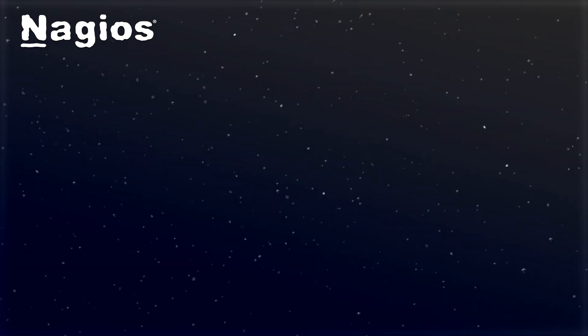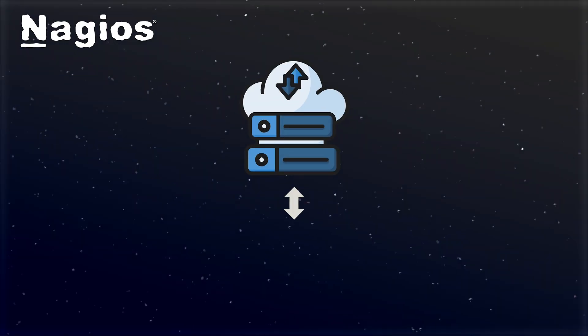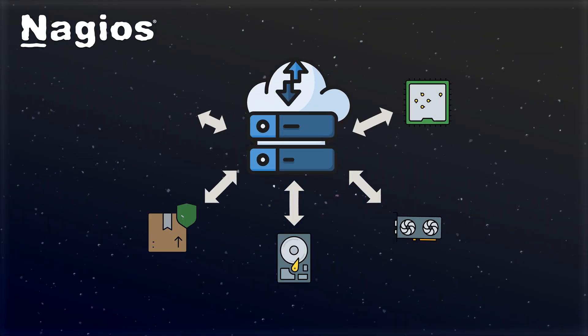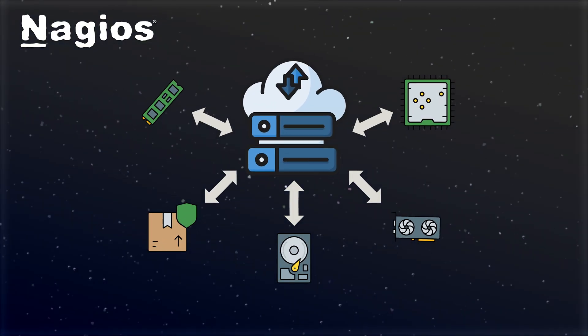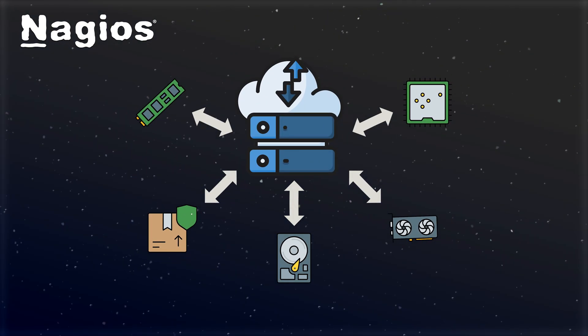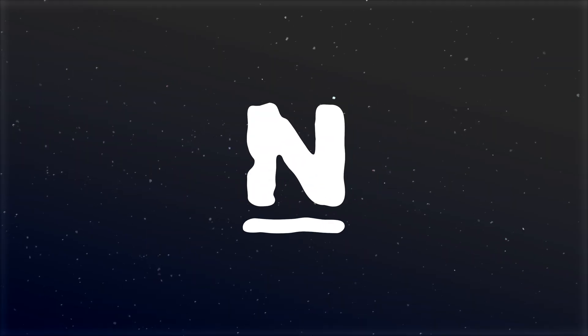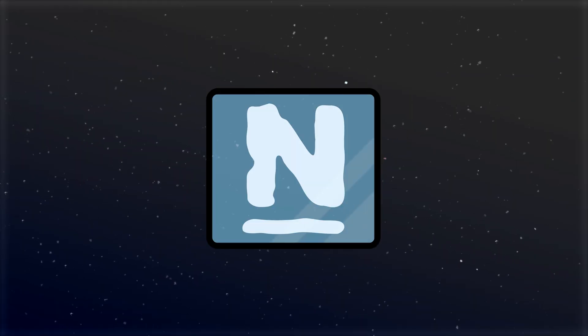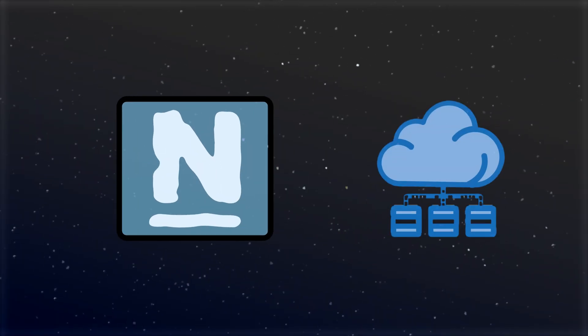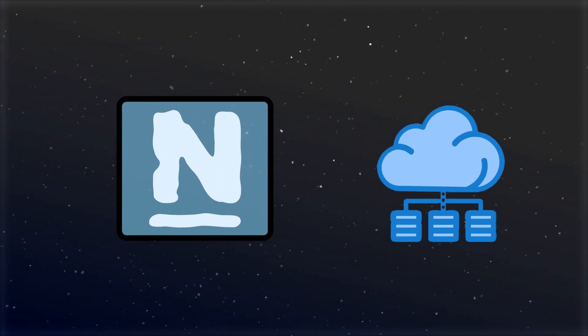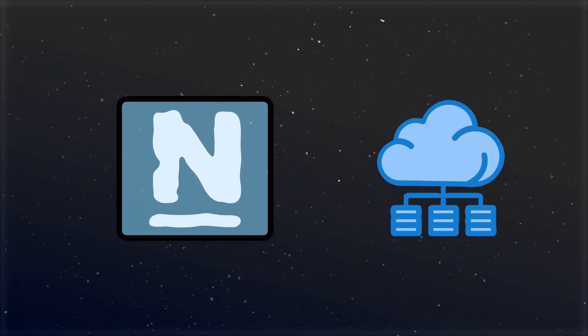Second, comprehensive visibility. Modern IT environments are complex with hundreds or thousands of interconnected components. Nagios gives you a single pane of glass to see the health of your entire infrastructure at once.